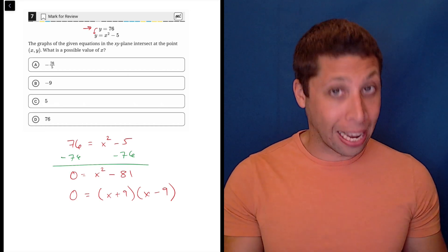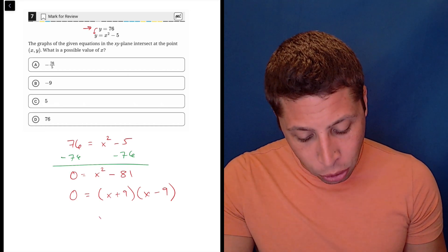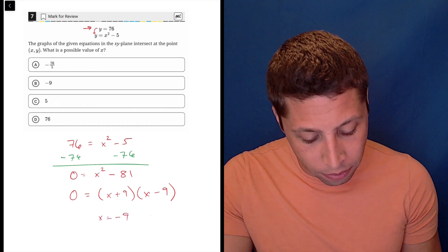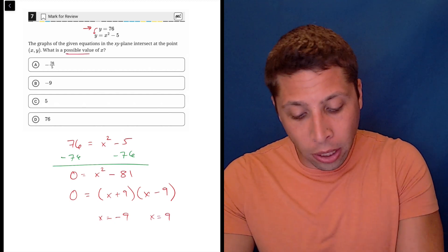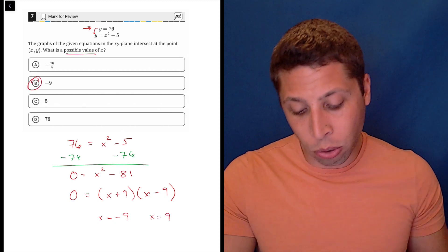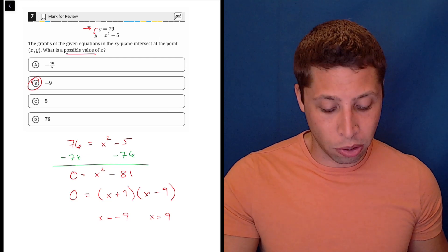So X plus nine, X minus nine. And this is how we get two solutions. X is equal to negative nine and X is equal to positive nine. They're looking for a possible value, and so there you go. B is one of the two solutions.